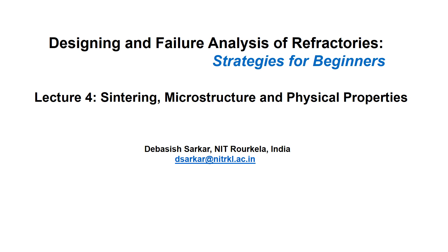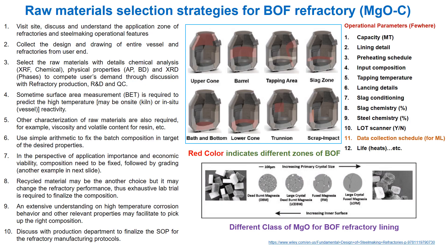Welcome to Lecture 4. Here onwards I will give emphasis on the strategies of refractory composition design. Before briefing the concept of sintering, microstructure, and physical properties, some basic features on raw material selection, processing parameter optimization, how to develop SOPs, and some more critical points will be discussed. We can start with magnesia carbon refractory for BOF.